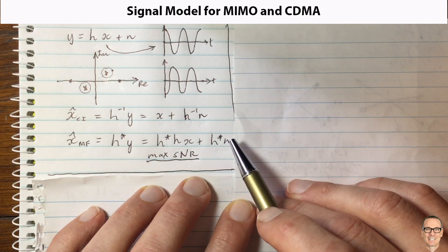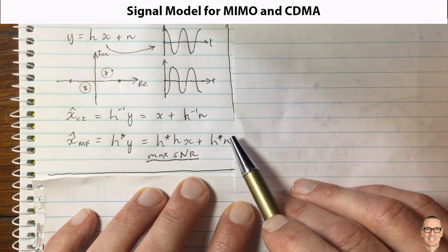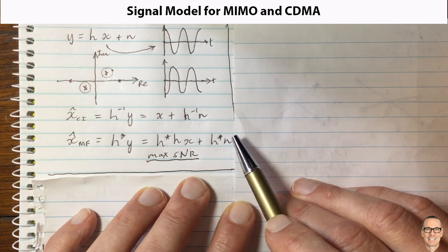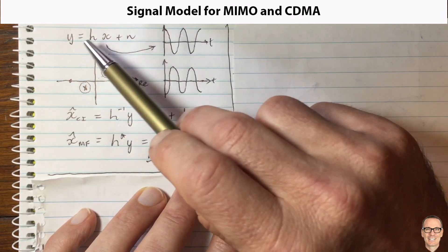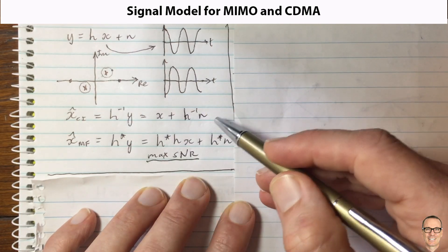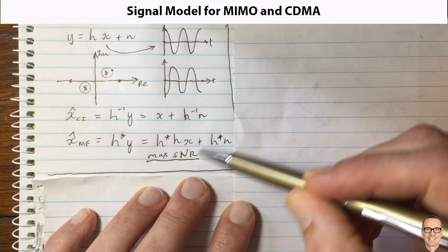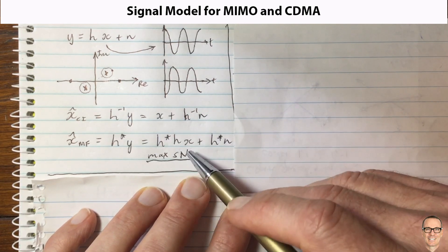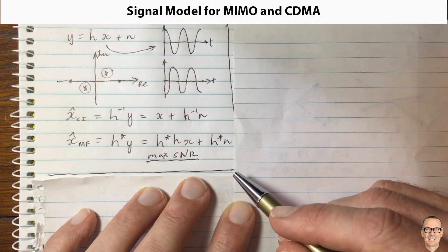In this video we're going to look at a baseband signal model and show that the same model can actually hold for MIMO and for CDMA. We're going to assume in this video that you understand the basic scalar versions of the channel inversion filter and the matched filter. If you want more information on this you can check out the link below where there's a link to the video on this topic.